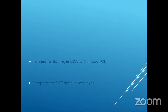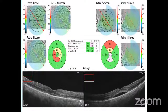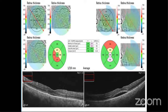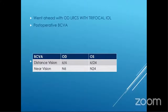The pre-operative OCT was done in both eyes and revealed subretinal fluid in the left eye. This was done on the day of surgery. As a result, we went ahead with the right eye cataract surgery first. Post-operatively, we had good visual acuity recovery in the right eye. Subsequently, during follow-up, he underwent fundus fluorescein angiography of the left eye.